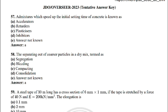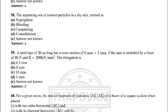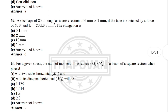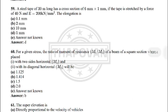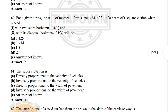Next: the separating out of coarser particles in a dry mix is termed as — option A: segregation. Next: a steel tape of 30 metres long has cross section of 6 mm × 1 mm. If the tape is stretched by a force of 40 N and E = 200 kN/mm², the elongation is — the correct answer is option D: 1 mm.